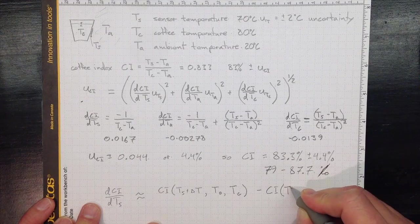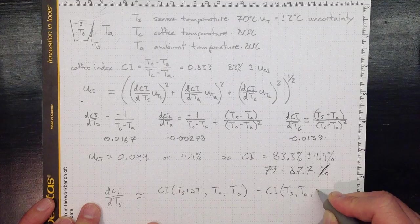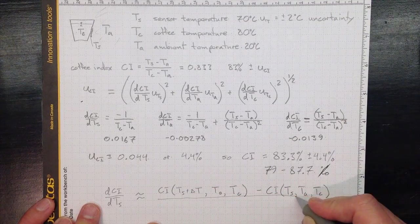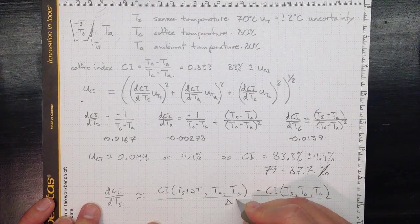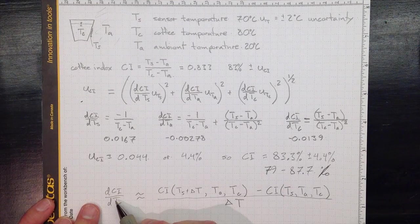minus whatever CI we would calculate if we put in just TS, TA and TC, all divided by that delta T. That gives us a good approximation for that derivative.